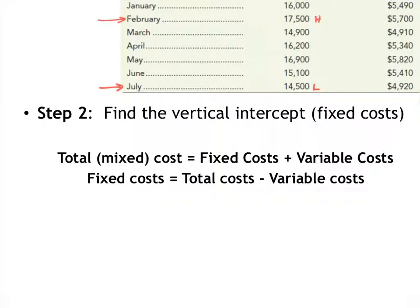Our second step in the process is to find the vertical intercept which is also the fixed cost. So to do this we know that our total costs are equal to our fixed cost plus our variable cost. And since I'm looking for fixed cost I can rearrange my equation so I get fixed cost on one side by itself. So fixed costs are equal to total cost minus variable cost. Now to do this we can pick either one of our two points. We can pick the high level or the low level. So we'll start with the high level.